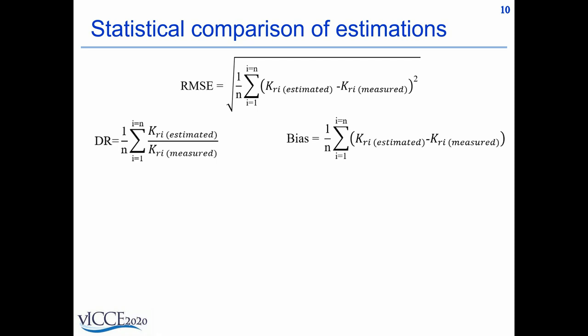To compare the measurements and estimations quantitatively, the statistical measures of root mean square error, discrepancy ratio and bias were used. If the formula or model estimates the measurements well, RMSE should be close to 0, DR should be close to 1 and bias should be close to 0.